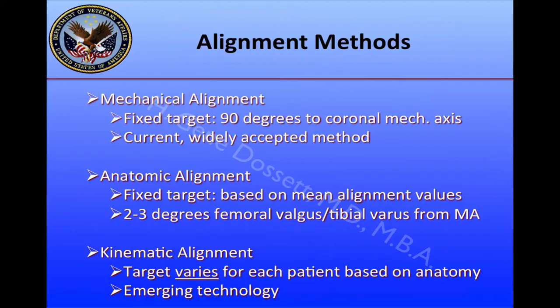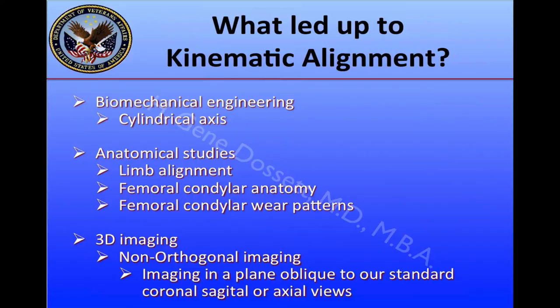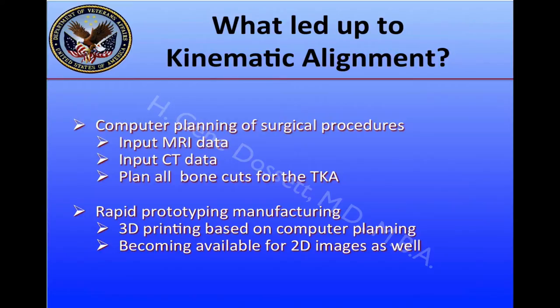Kinematic alignment is an emerging technology. What led up to it? Biomechanical engineering studies, especially those about the cylindrical axis; anatomic studies of limb alignment and femoral anatomy; 3D imaging, especially in a non-orthogonal plane — imaging oblique to standard coronal, sagittal, or axial views; computer planning of surgical procedures, including inputting MRI and CT data, planning all bone cuts for total knee arthroplasty, and then linking computer planning to rapid prototype manufacturing — essentially 3D printing based on computer planning. This type of manufacturing is now becoming available for 2D images as well.